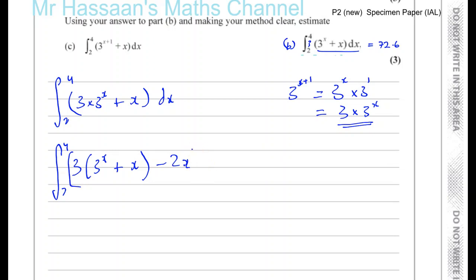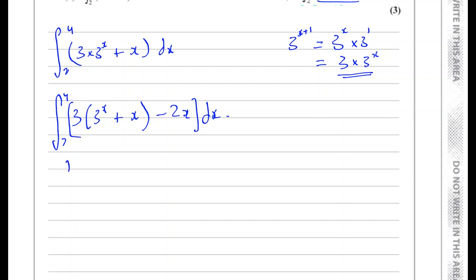So that is something which we can work with because this 3 to the power of x plus x is the same as what we found earlier. And we know it's an approximate integral of it, 72.6. We know that value. So I can now deal with the rest of it. So what I can do here is I can say, I have the integral between 2 and 4 of 3 times 3 to the power of x plus x. And I can split this up into a separate integral.